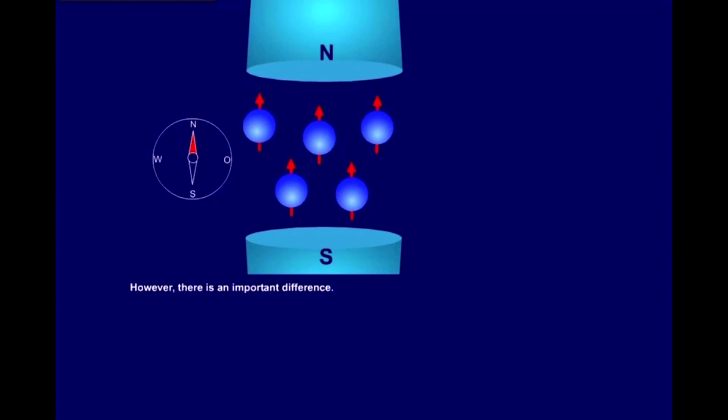However, there is an important difference. For the compass needle, there is only one way to align itself with the magnetic field. For the protons, however, there are two. The protons may align with their south and north poles in the direction of the external field parallel to it, or they may point in the completely opposite direction, anti-parallel.